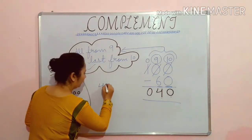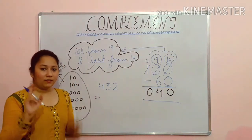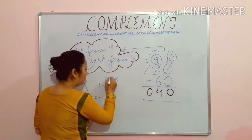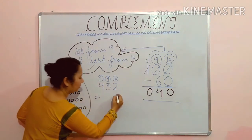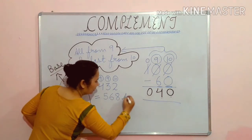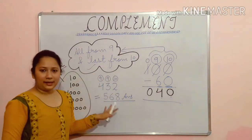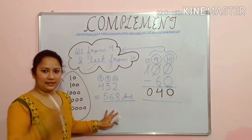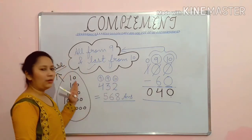Now subtract it with the base. The trick: last from 10 and others from 9. So 10 minus 2 is 8, 9 minus 3 is 6, and 9 minus 4 is 5. And that is your answer. Without subtracting step by step, without writing all the carry work, I have done this subtraction in just a few seconds. What you have to learn is the trick: last from 10 and others from 9.